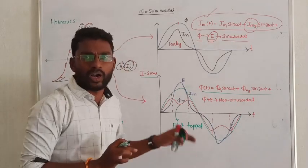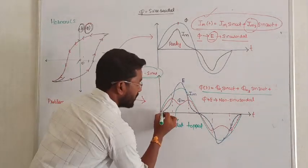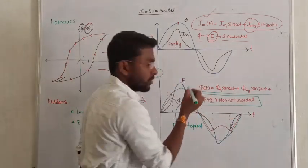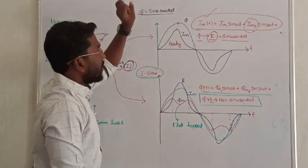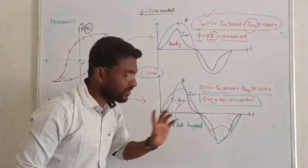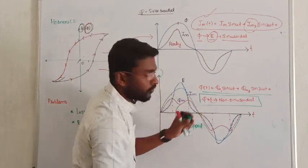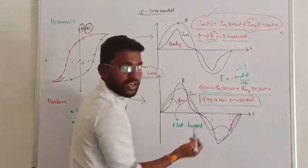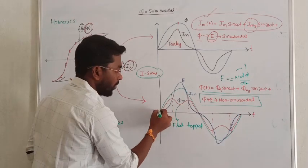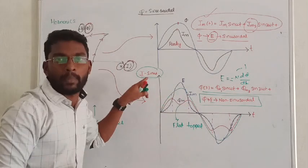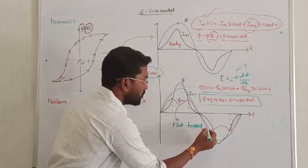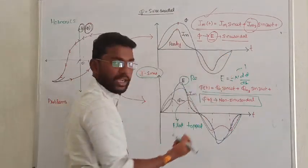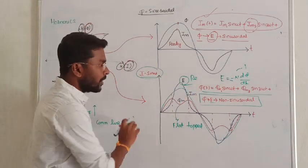The conclusion for Case 2: whenever the current is sinusoidal in the transformer, the flux will be flat-top and non-sinusoidal. Since the induced EMF depends on the flux, the induced EMF will also be non-sinusoidal. The induced EMF is given by e equals minus N times d-phi by dt. If you differentiate the flat-top flux waveform and multiply by minus N, you get the resulting induced EMF waveform.